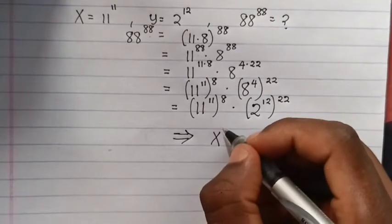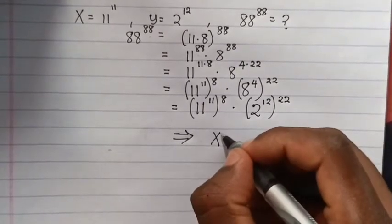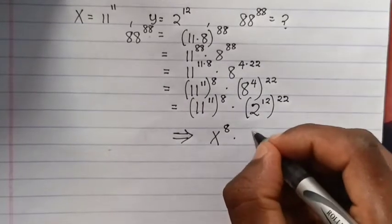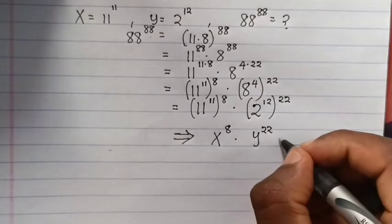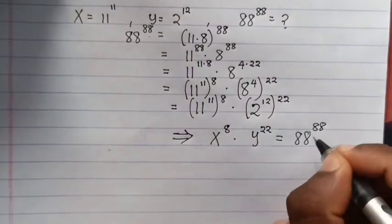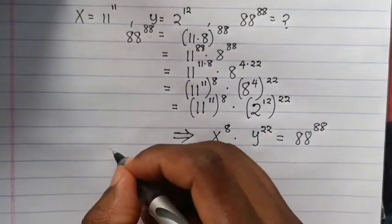This is the same as 88 to the power of 88. That's our answer: x to the power of 8 times y to the power of 22.